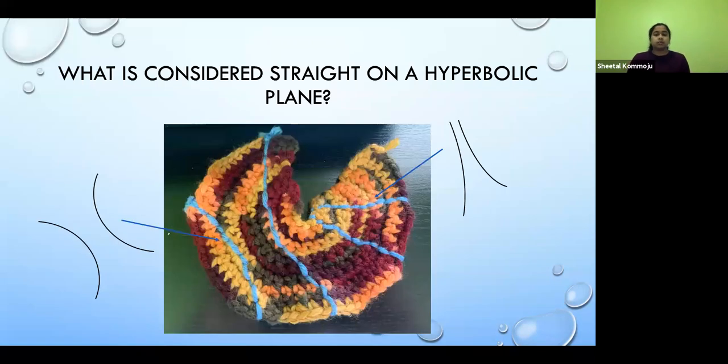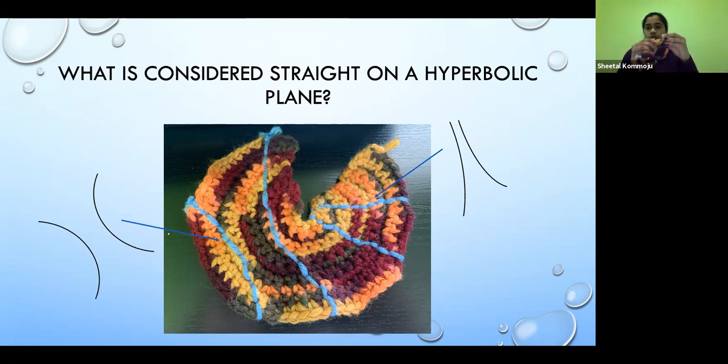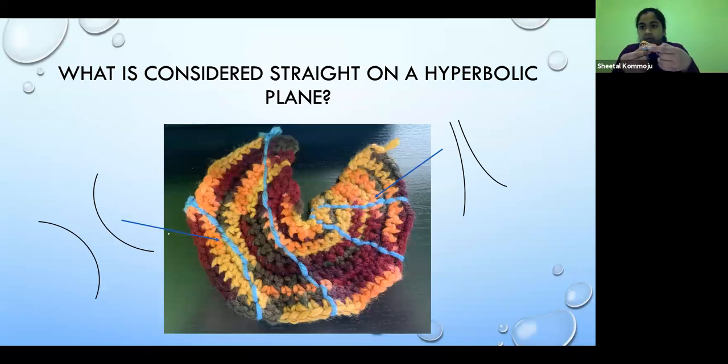So the best way we found to model our physical hyperbolic planes were to crochet them. And I have a model here with me, which is the same as the one on the screen. So this is our crocheted hyperbolic plane. So the way we drew our straight lines is to fold our crocheted model to create the straight line like so. And we see that it looks straight. So I stitched this blue yarn across this line here. And when I reverted back to its original shape, we see that it starts to curve a little bit.